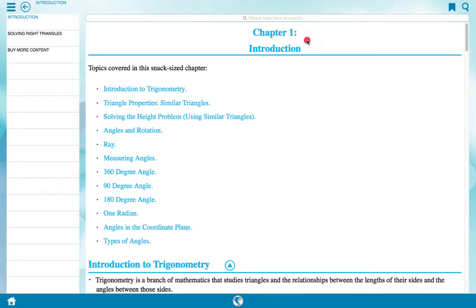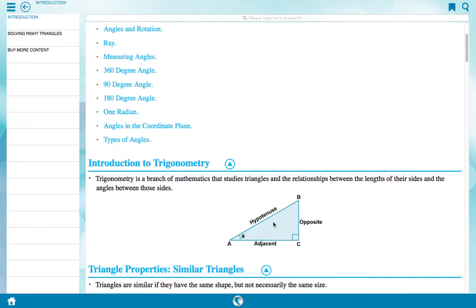Chapter 1 Introduction. Topics covered in this Snackside chapter: Introduction to trigonometry, triangle properties, similar triangles, solving height problem using similar triangles, angle and rotation, ray, measuring angles, 360 degree angle, 90 degree angle, 180 degree angle, 1 radian, angles in coordinate plane, types of angles. We will discuss all these things in this topic. Let's see here step by step.